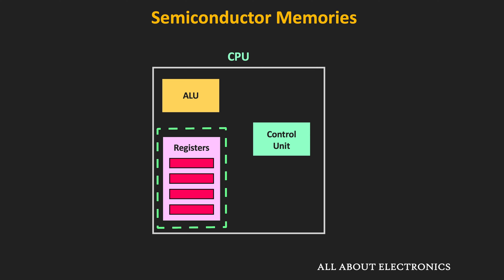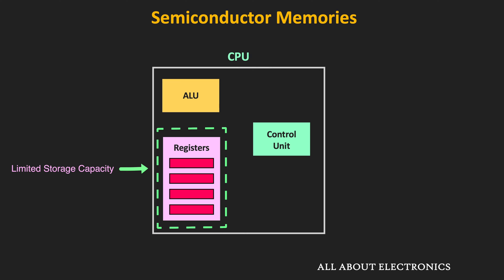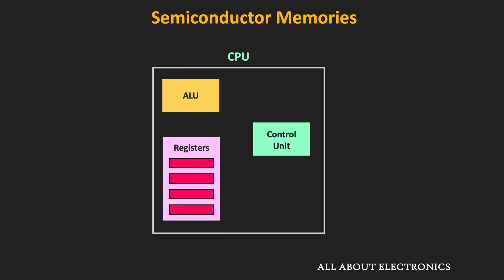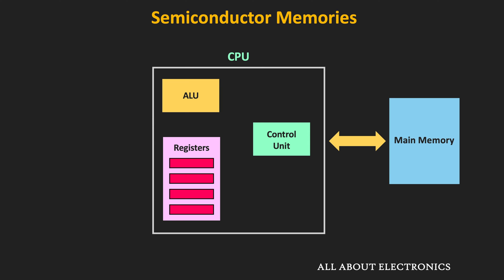These registers store the data and instructions which are currently being processed by the CPU. But these registers can store only up to a few bits of information, and the CPU consists of only a handful of such registers. That means the CPU needs larger storage, like in megabytes or gigabytes, which is fast enough and can also store the programs or OS processes required by the CPU during operation. This memory which the CPU frequently accesses during operation is known as the main memory. There are two types of main memory: RAM and ROM.